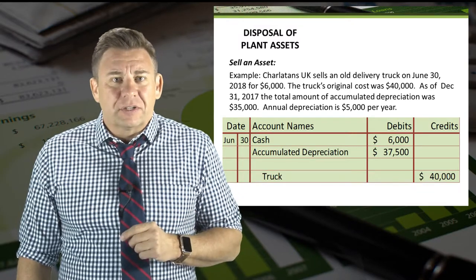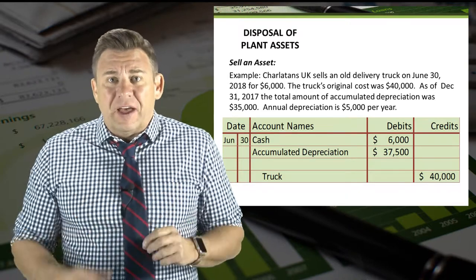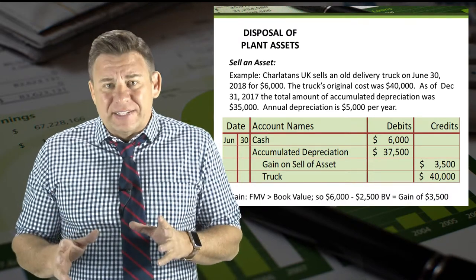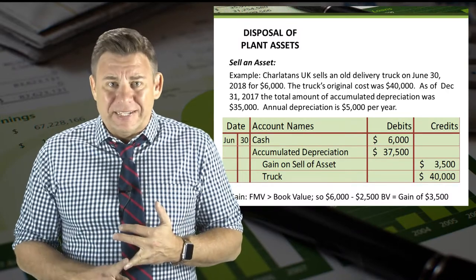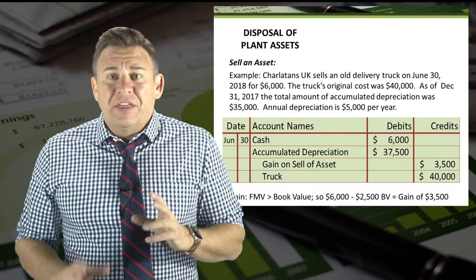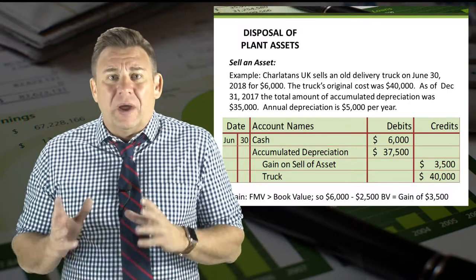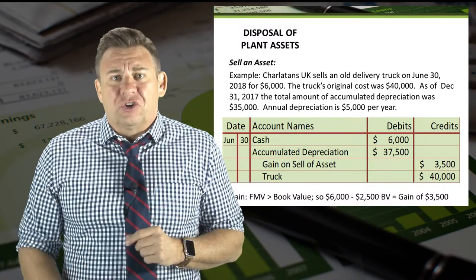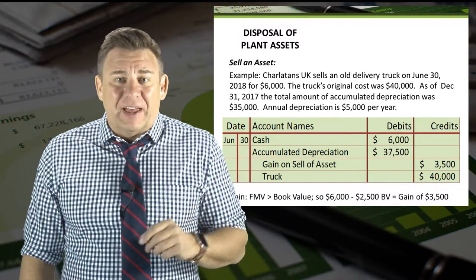We also need to credit the truck account for its balance of $40,000 to remove the truck from our books. At this point the journal entry doesn't balance — we need a credit of $3,500. In this case we incurred a gain on the sale. Gains are like revenues: they have a normal credit balance and increase net income. When the fair market value of an asset is greater than its book value, we have a gain. The gain of $3,500 is both the difference between fair market value and book value, and the plug number needed to balance the entry.